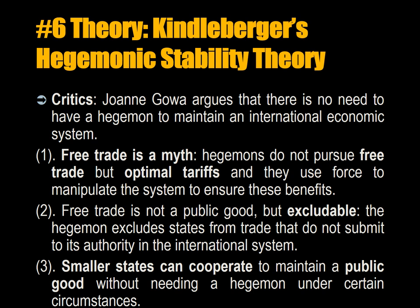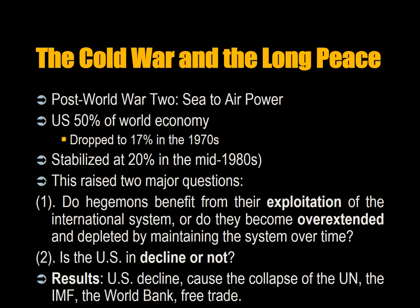Number three, smaller states can actually cooperate to maintain a public good without needing a hegemon under certain circumstances. The circumstance is called the Coase theorem, and there is a fair bit of literature about how small countries can overcome coordination problems — the Coase theorem shows that you do not need a coordinator or a director to achieve these outcomes.